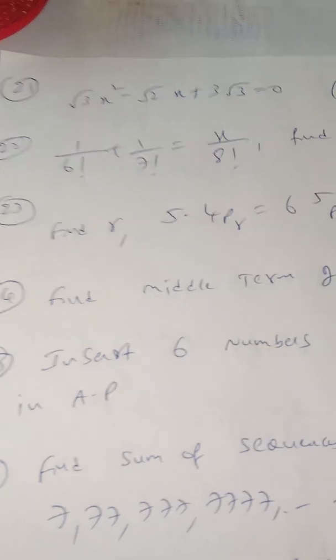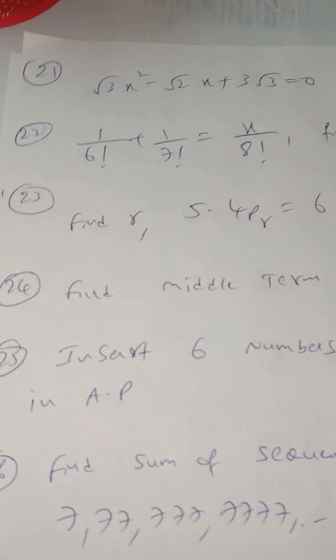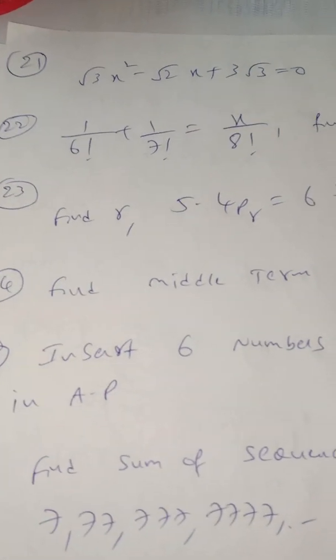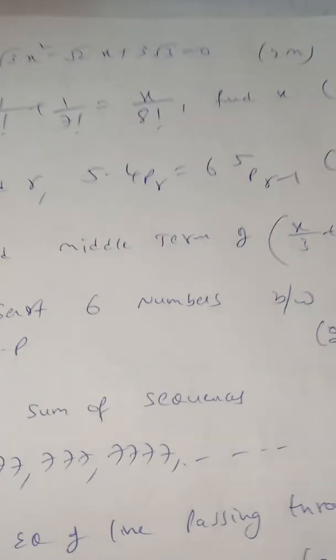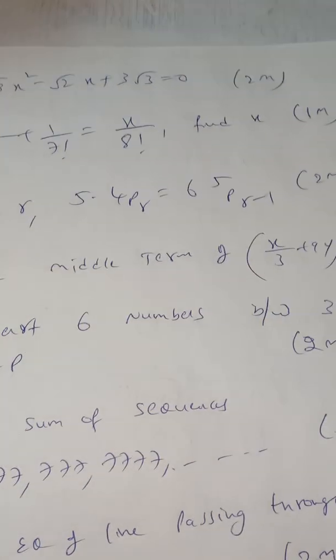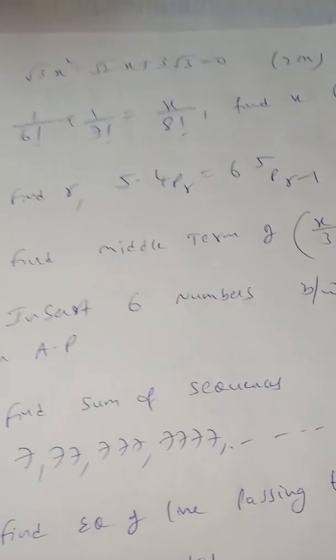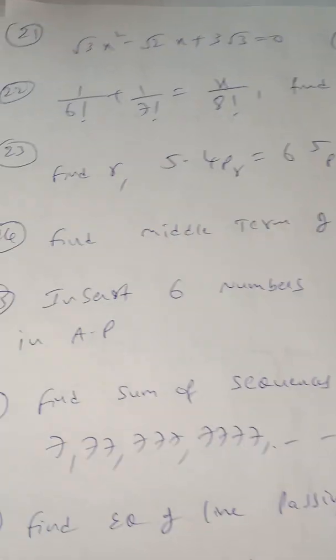From sequence and series: insert 6 numbers between 3 and 24 in AP, or insert 6 numbers in GP. Out of these two questions, one will appear in the final exam for 2 marks in the sequence and series chapter.